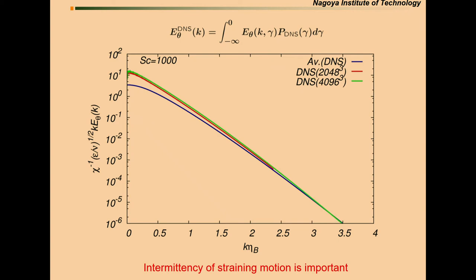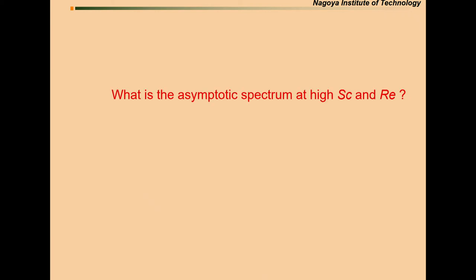So far, the story is about the result for moderate Reynolds number. Now, we'd like to explore what is the asymptotic spectrum, scalar spectrum, at high Schmidt number and high Reynolds number. We cannot do the DNS for this case because Schmidt number is quite high.